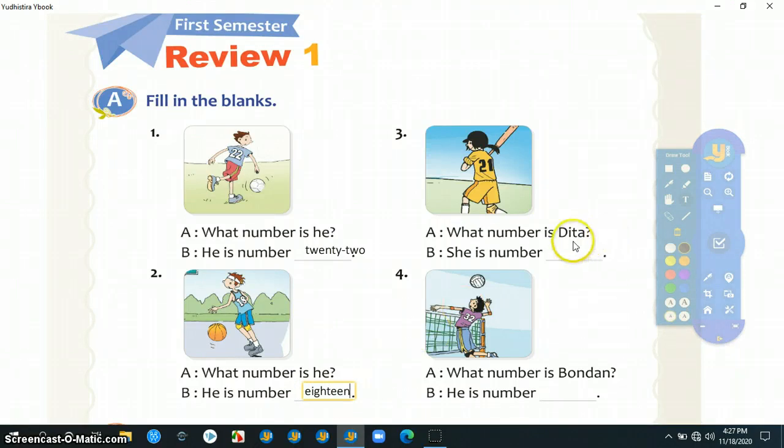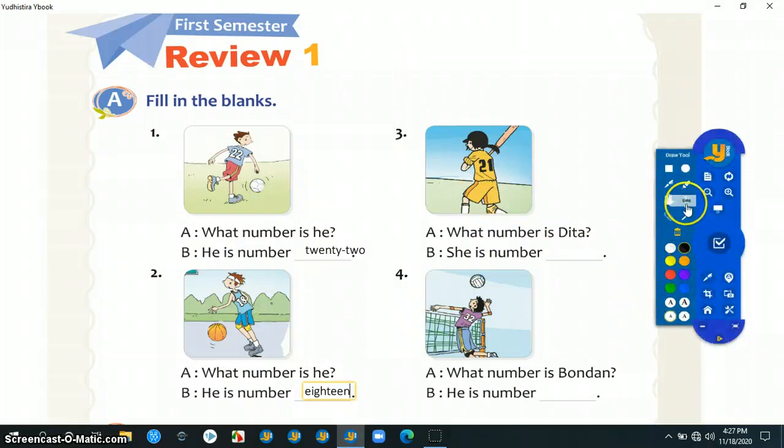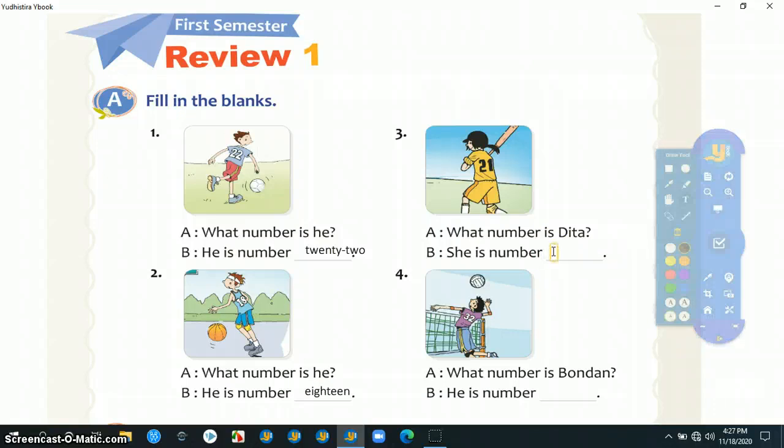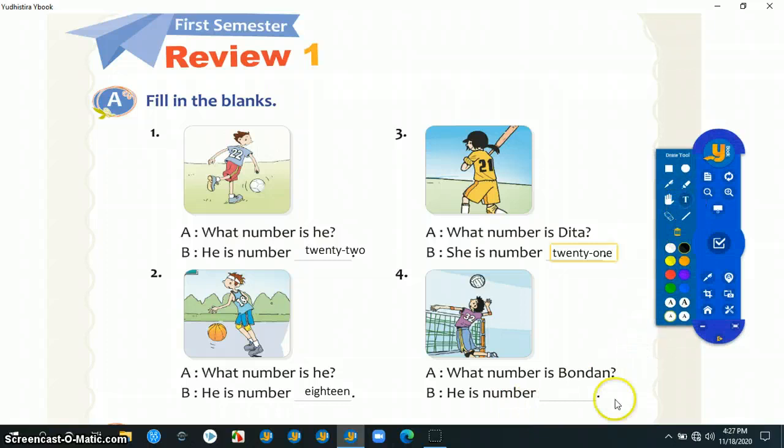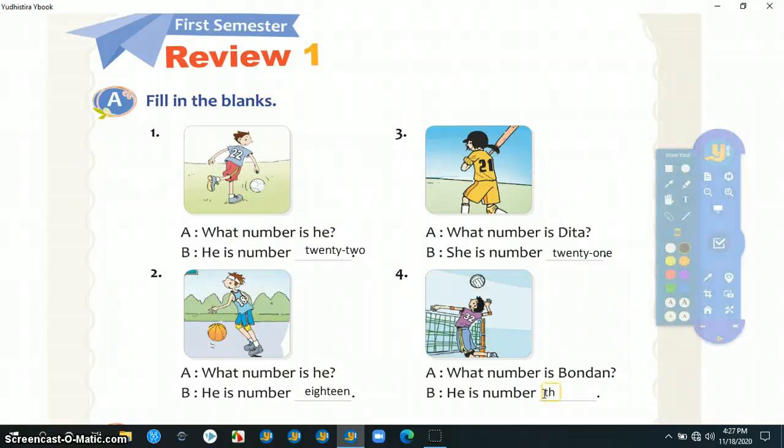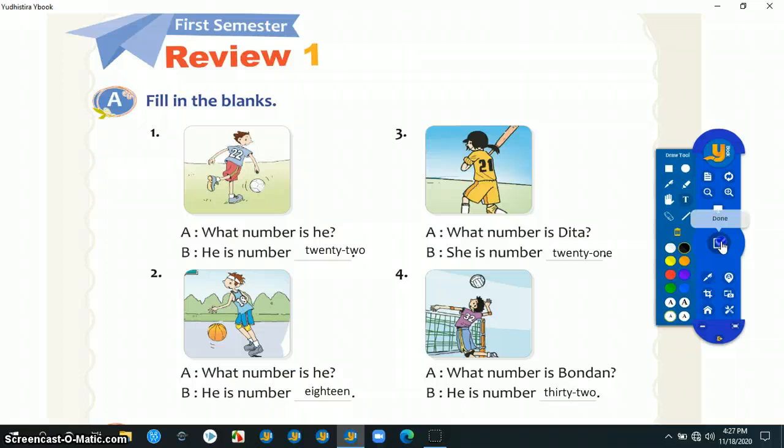Number three: what number is Dita? She is number 21. And then number four: what number is Bondan? He is number 32, like that. Let's continue to the next page.